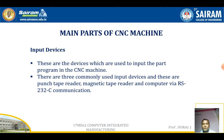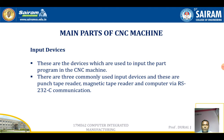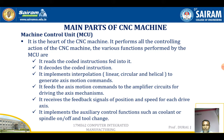Input devices are the devices used to input the program in the CNC machines. They involve step-by-step commands which are fed into the system. The part program is written and fed into the system with the help of input devices. There are three types of input devices: punch-tape reader, magnetic-tape reader, and computer. Punch-tape and magnetic-tape readers are used for NC machines, while computers are used for CNC machines, which can store more programs.